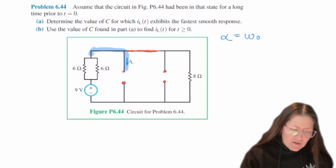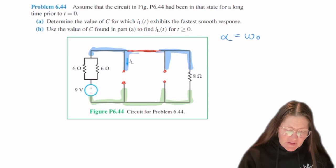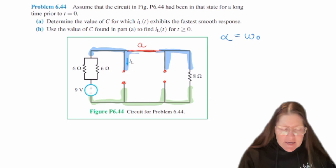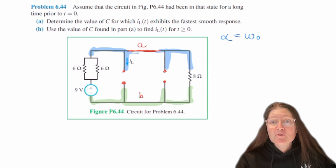The top of this is going to be the same color and then the bottom will be a different color. So I like to label the top one A and the bottom one B. And then for the RTH we need to remove all of the independent sources.